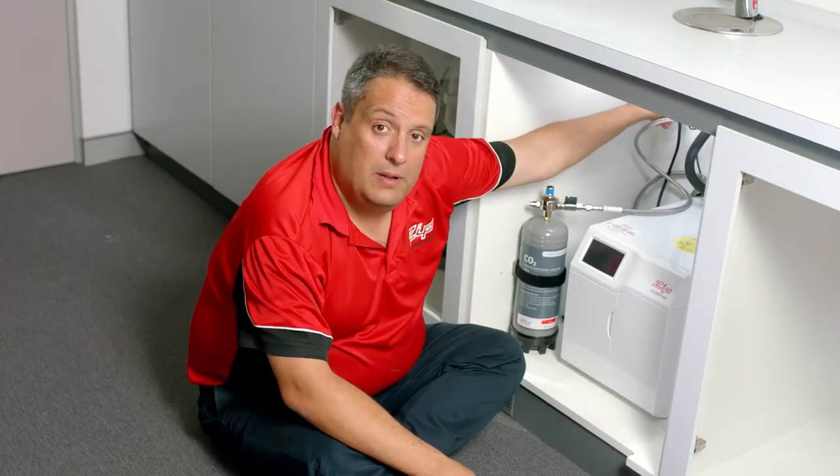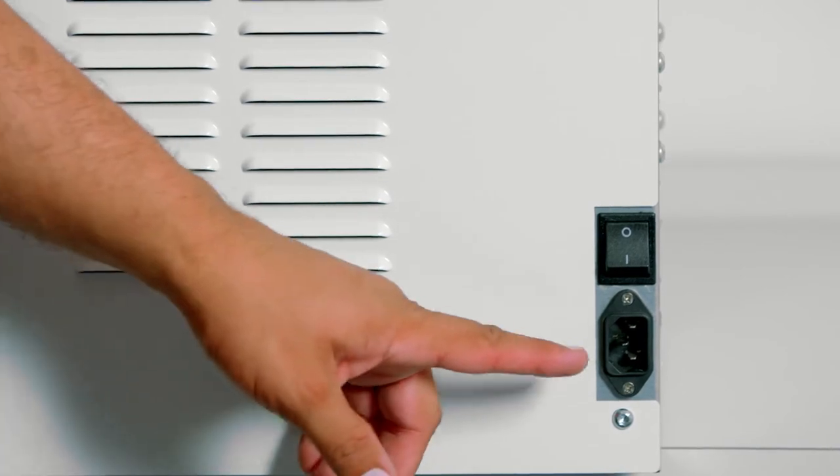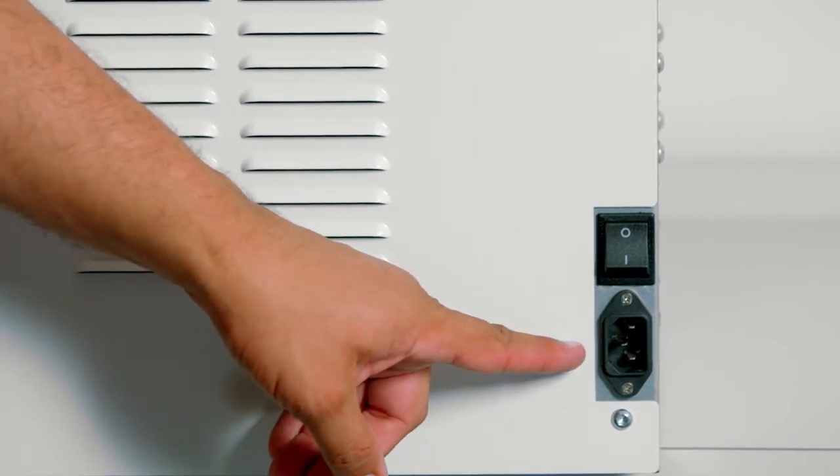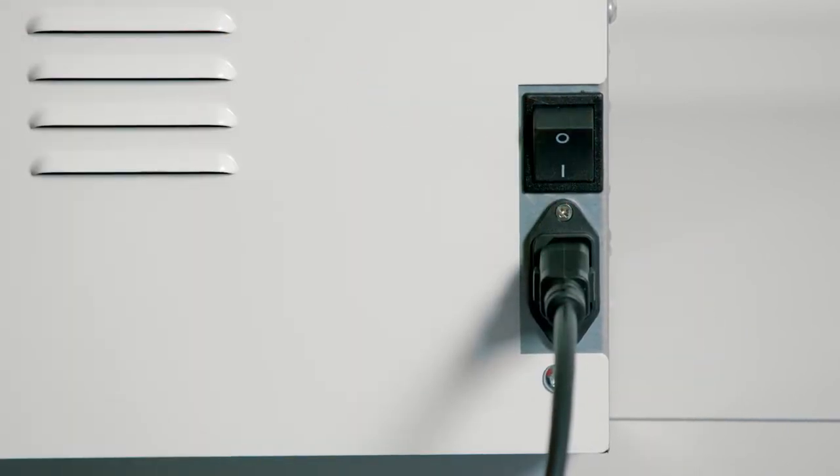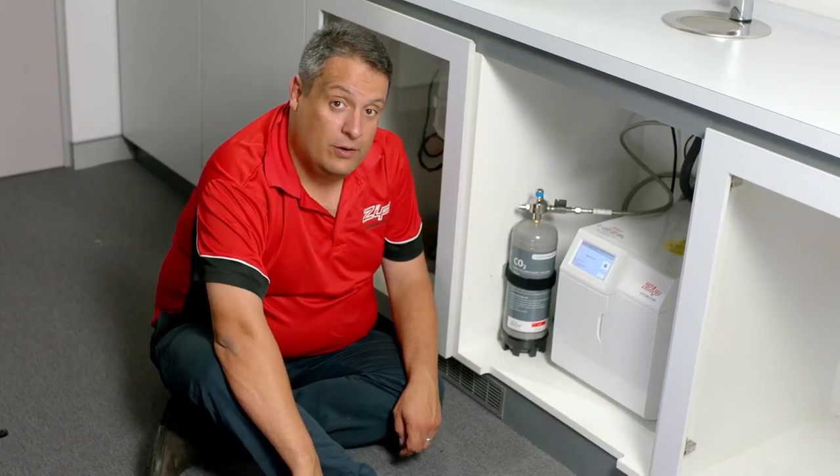Next step, plug in the power supply, turn the water on and then turn the power on. For newer models of the HydroTap, they come with an IEC electrical connection which is found on the right-hand side of the unit. Plug the cable in and turn the switch on.